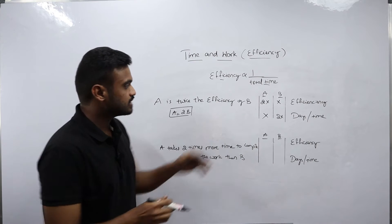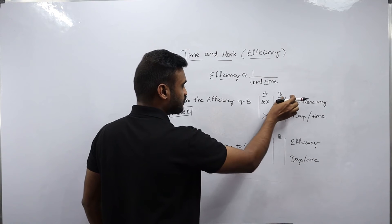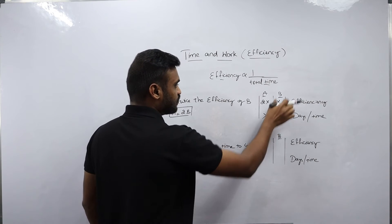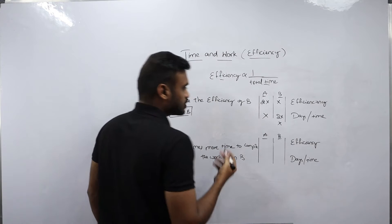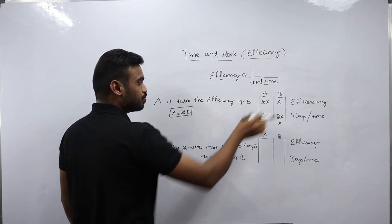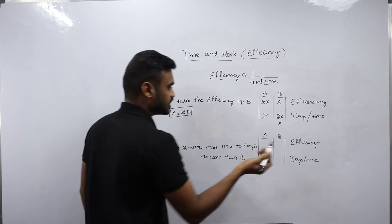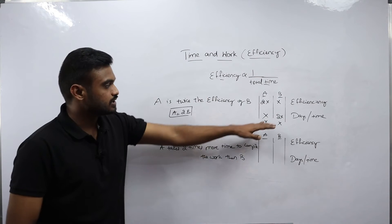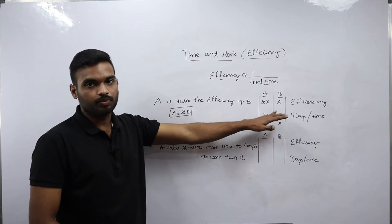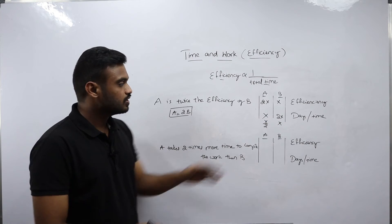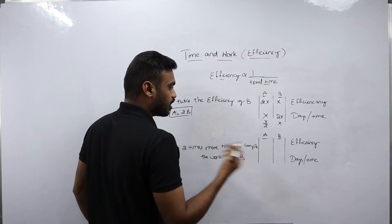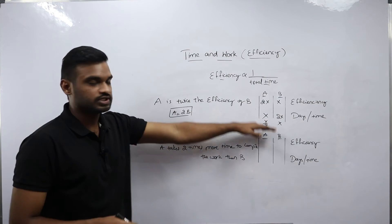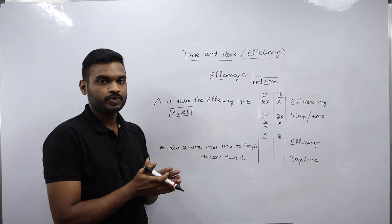Second example: A takes 2 times more time to complete the work than B. If B takes x-dash days, then A takes 2x days. Since efficiency and total time are inversely proportional, the efficiency of A and B will be x and 2x respectively — always reciprocal.